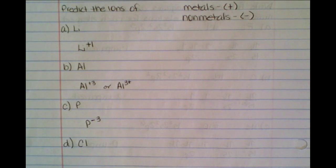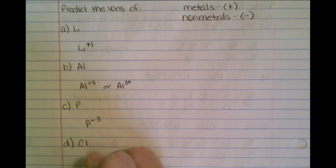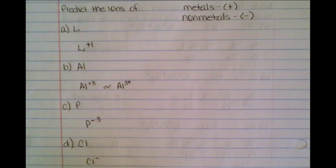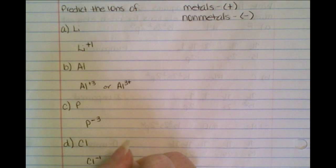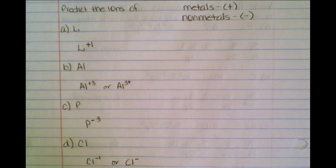And finally, I've got chlorine, and it is automatically going to be a negative charge, right, because it is a non-metal. And how far do I have to go to the right? I have to go one place, so this can be a minus one, or you can just write Cl minus.